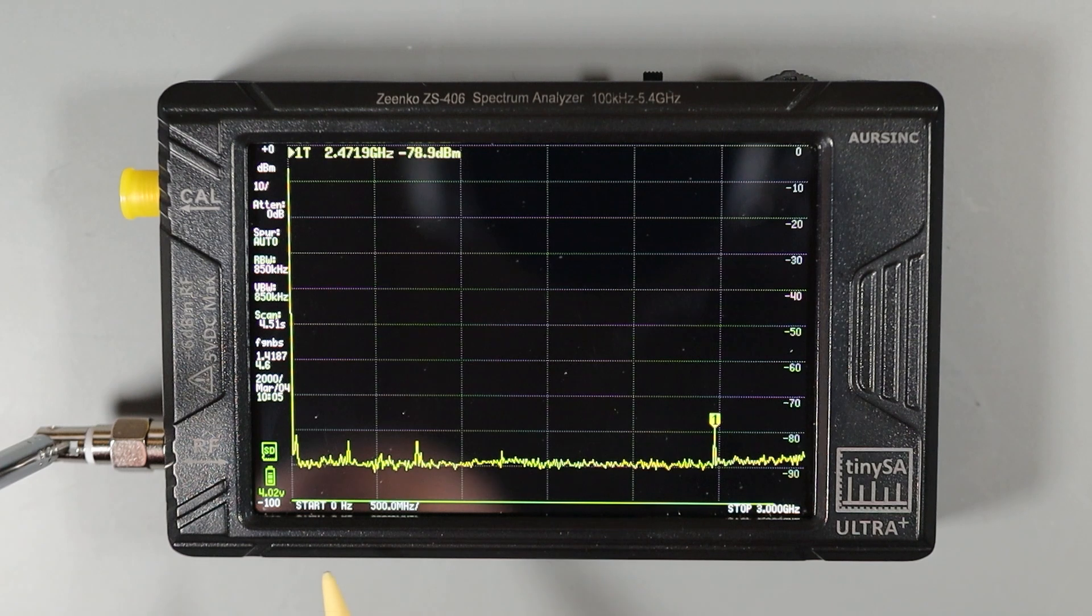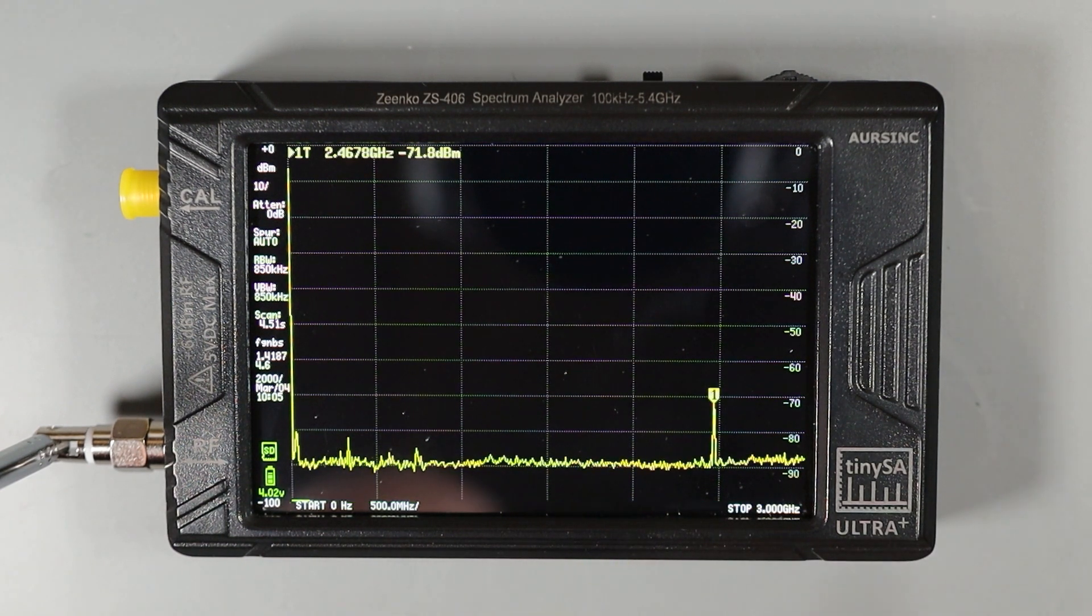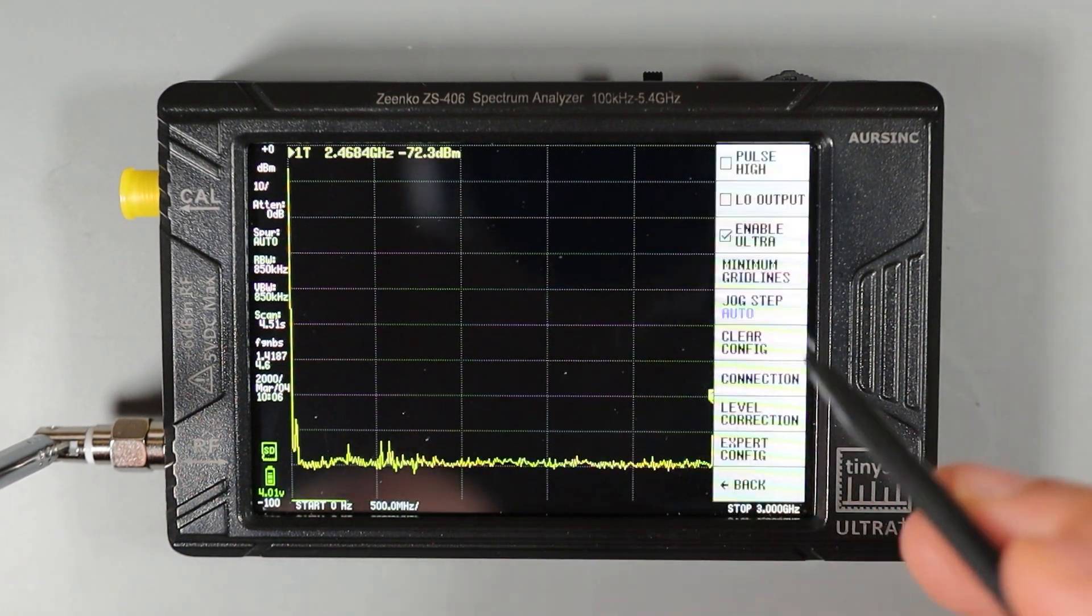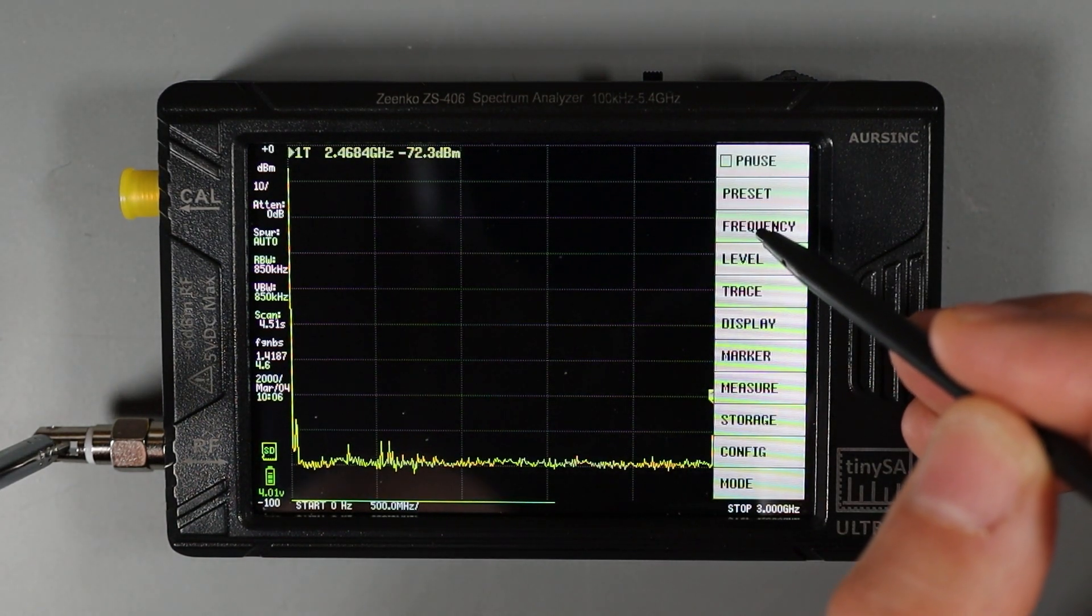Now you can see we're in ultra mode and we're scanning between zero and three gigahertz. You're probably also noticing that the scan speed is much slower than it was in normal mode. And that's because we're looking at a much wider frequency span than we were in default mode. So if we go in and change the frequency, we can increase that scan speed a little bit.